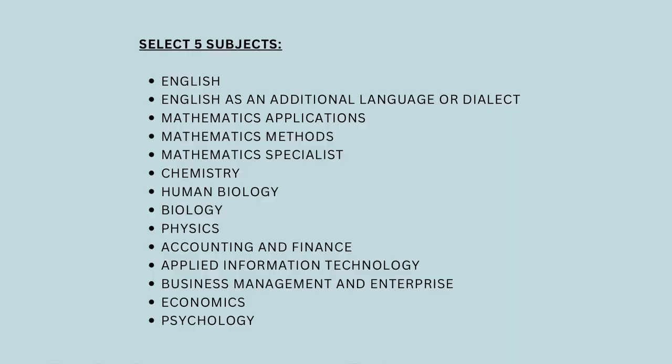Subjects and subject combinations. AUSMAT offers quite a lot of subjects compared to A-levels. The subjects include English, English as an Additional Language or Dialect (EALD), Mathematics Applications, Mathematics Methods, Mathematics Specialist, Chemistry, Human Biology, Biology, Physics, Accounting and Finance, Applied Information Technology, Business Management and Enterprise, Economics and Psychology. Note that subjects offered vary depending on which college you go to — some subjects offered in Sunway are not offered in MCKL or vice versa.